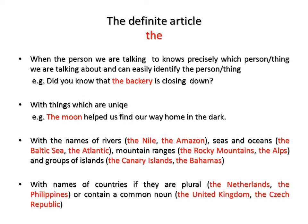The definite article is used when the person we are talking to knows precisely which person or thing we are talking about and can easily identify the person or thing. For example: 'Did you know that the bakery is closing down?' We use the article 'the' with things which are unique. For example: 'The moon helped us find our way home in the dark.'